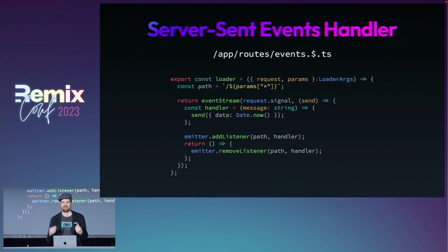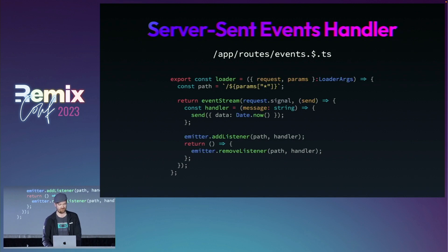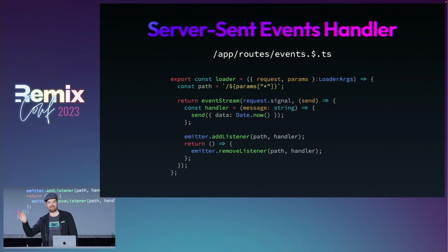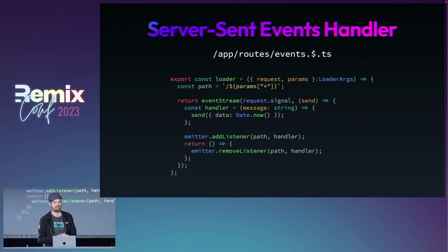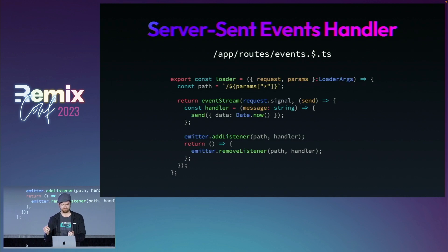The second thing that you need for real-time is some kind of transport mechanism. WebSockets is a good option, but we're going to use server-sent events for this one. Take note of where this server-sent event loader is living — it's slash event slash splat. You can put anything you want after that. I'm actually putting the route that the client is currently attached to in that splat, so slash or slash issue slash two or whatever. We pull that out in our loader and use the eventStream object from Sergio's excellent remix-utils to create this event stream, listening to that event emitter.